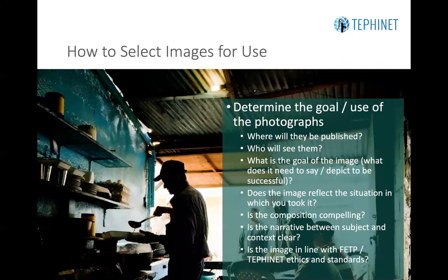To start, we want to learn about how to select images for use. To do so, one needs to determine the goal or the use of the photographs. That means asking oneself: where will the image be published? Who will see it? What is the goal of the image — what does it need to say or depict to be successful? What narrative is needed? Does the image reflect the situation in which you took it — is it representative? Is the composition compelling? Is the narrative between the subject and context clear? Does it tell an easily understandable story? And finally, is the image in line with FETP/TEFINET ethics and standards?